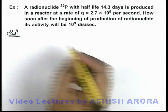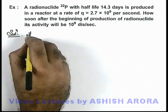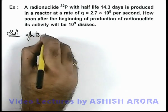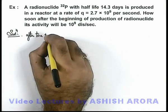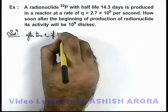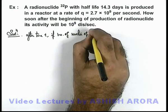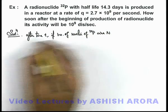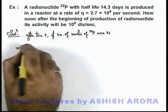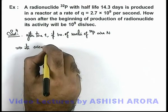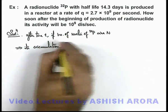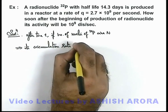So here we can write that after time t, when the production starts, if the number of nuclei of P-32 are N, this implies its accumulation rate will be...